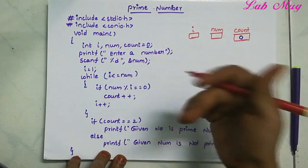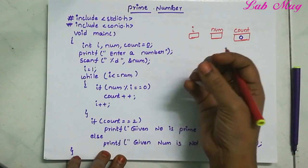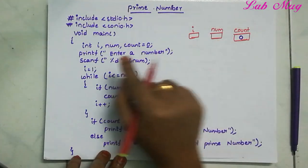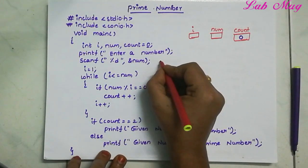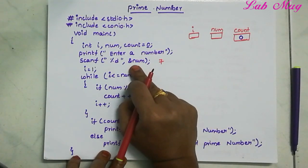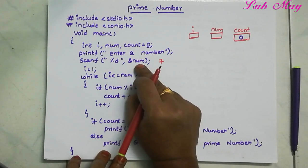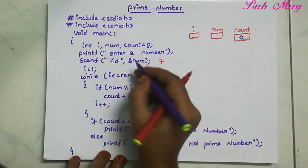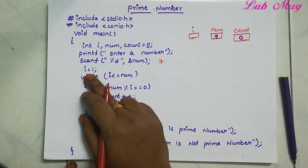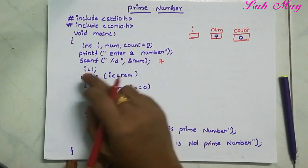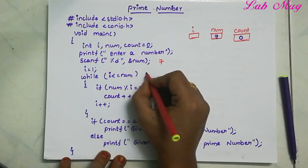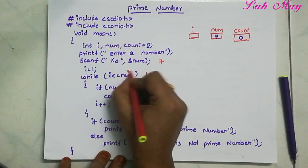Next, we display an 'enter number' message. The user enters a number — for example, user enters 7. That number 7 is stored in the variable number. Now we set up a for loop: i is initialized to 1, and the condition is i less than or equal to number, which is 7.